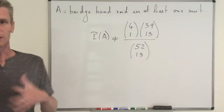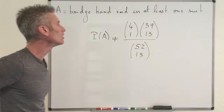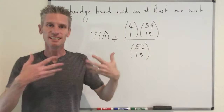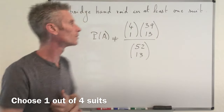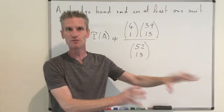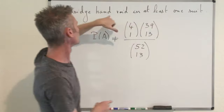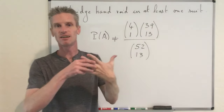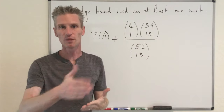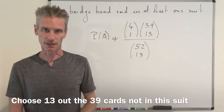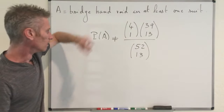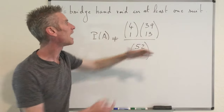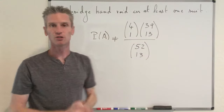We need to understand where this number comes from. In our deck of cards we have 4 suits, so 4 choose 1 is the number of ways to choose one suit. After choosing this suit and excluding it from the deck — because we want our bridge hand to be void in at least one suit — there are 39 cards left (52 minus 13). We then choose 13 cards from those 39. So this number represents the number of ways to choose one suit, times the number of bridge hands outside that suit, divided by the total number of possible bridge hands.